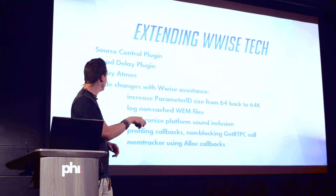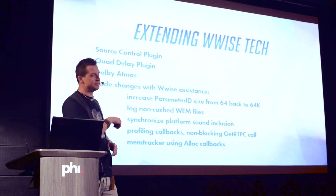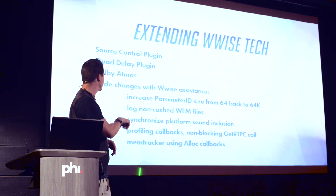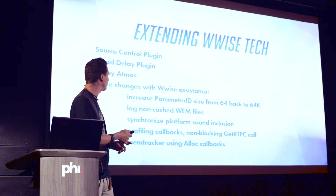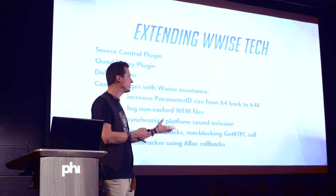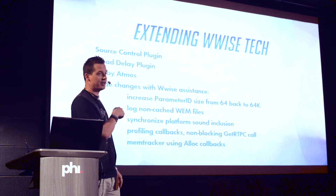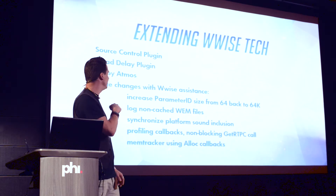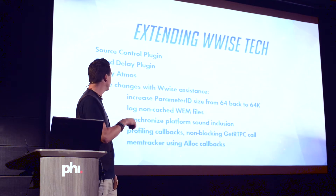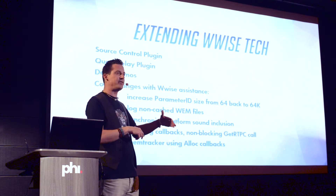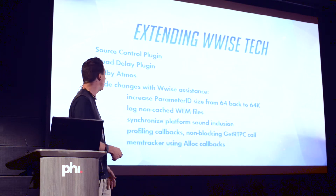Some of the things we did — maybe you can ignore half of it, it's just for documentation — we increased the parameter ID size back to 64k because we had trouble running our quad delay plugin, which uses so many RTPCs, more than 64. We are also logging when we cannot find a VEM file in our cache, which speeds up our audio importer.